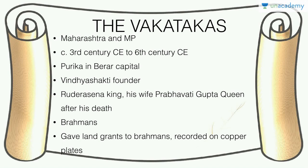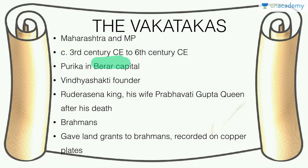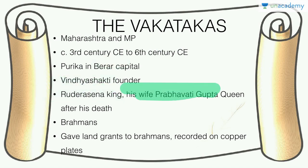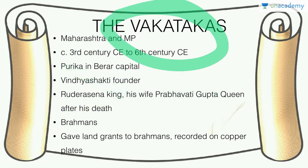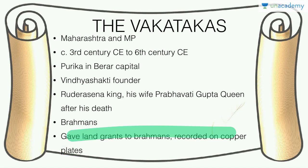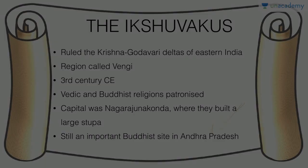The Vakatakas were all Brahmans and gave land grants to Brahmans, recording this on copper plates — our primary source for the Vakatakas. The Ikshvakus ruled the Krishna-Godavari delta region called Vengi in the 3rd century CE. They followed Vedic and Buddhist religion. Their capital was Nagarjunakonda — still a very important Buddhist stupa in Andhra Pradesh.